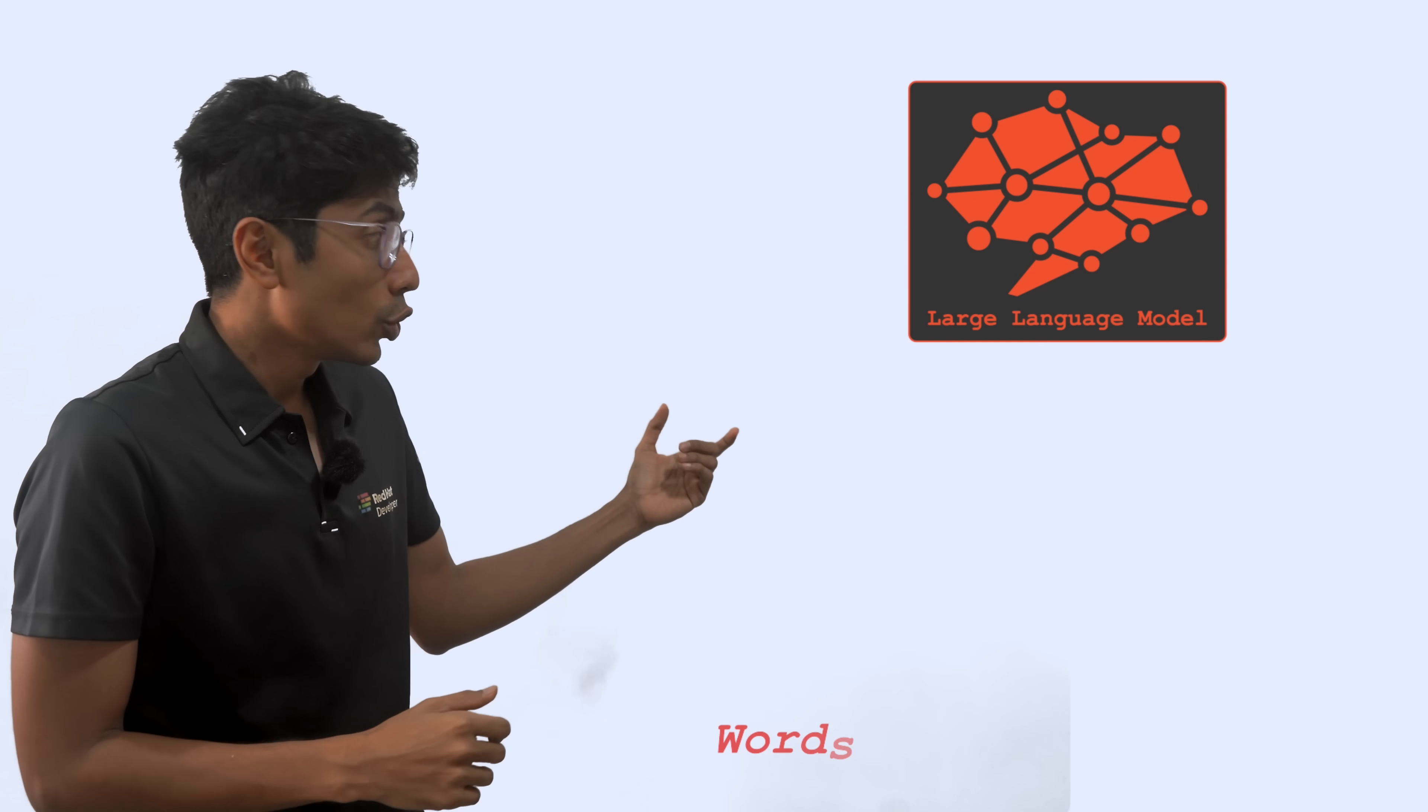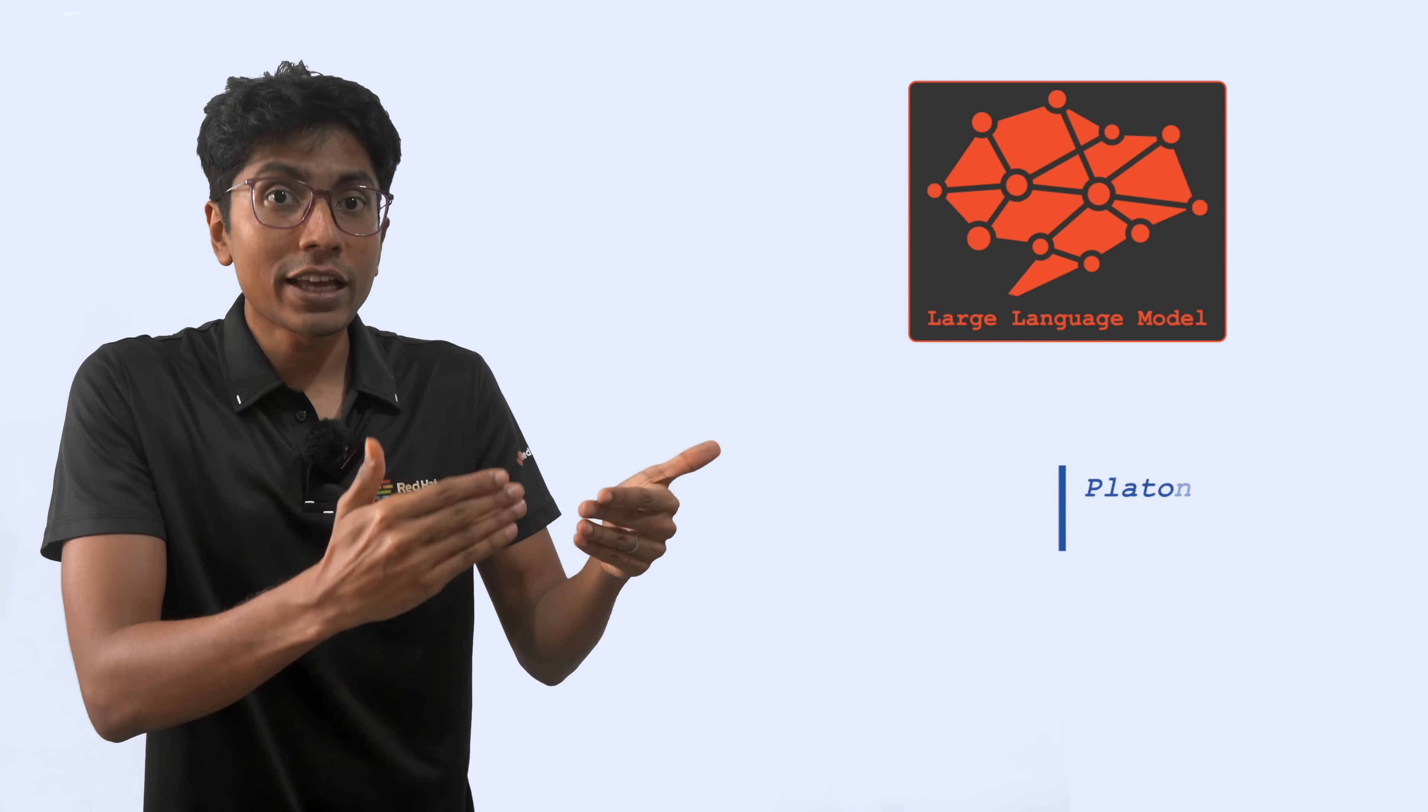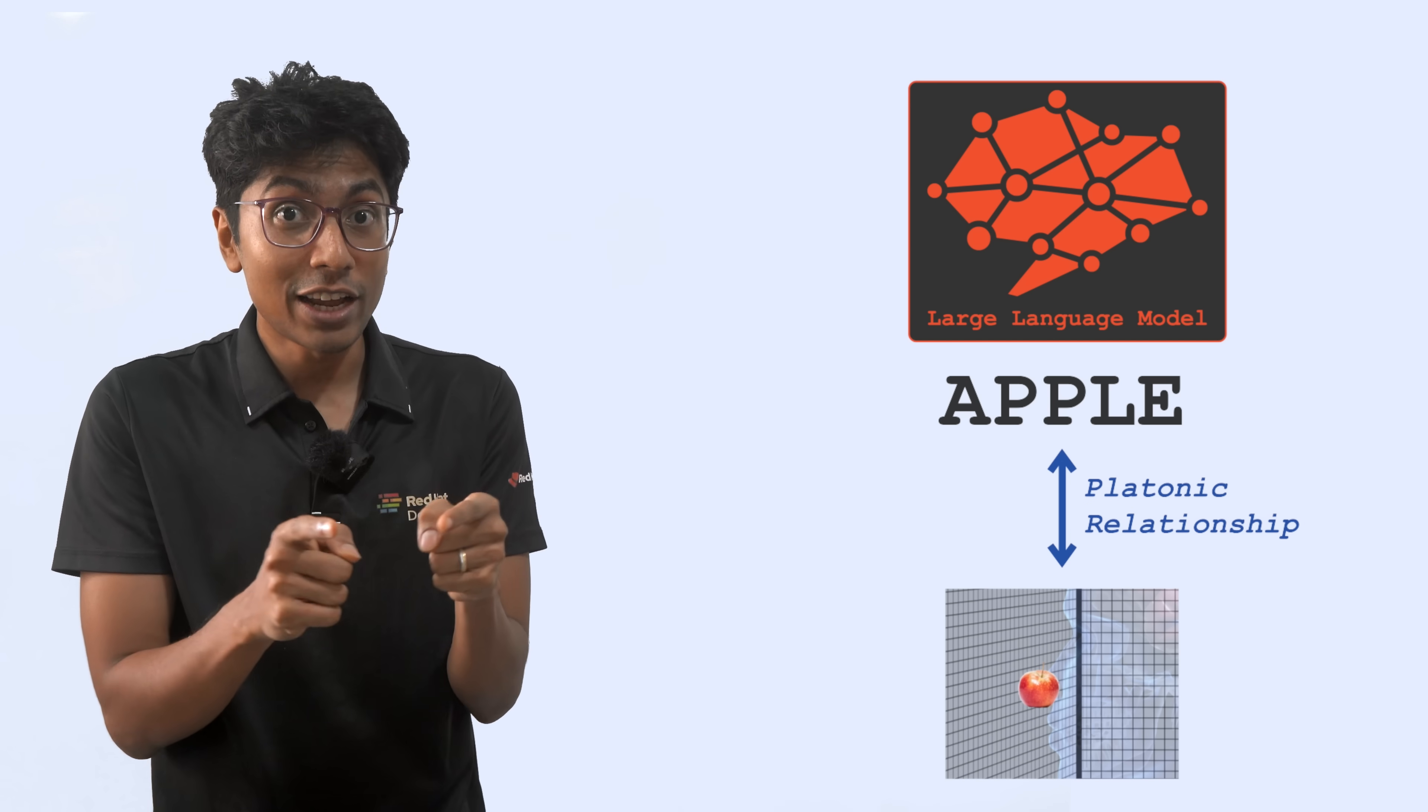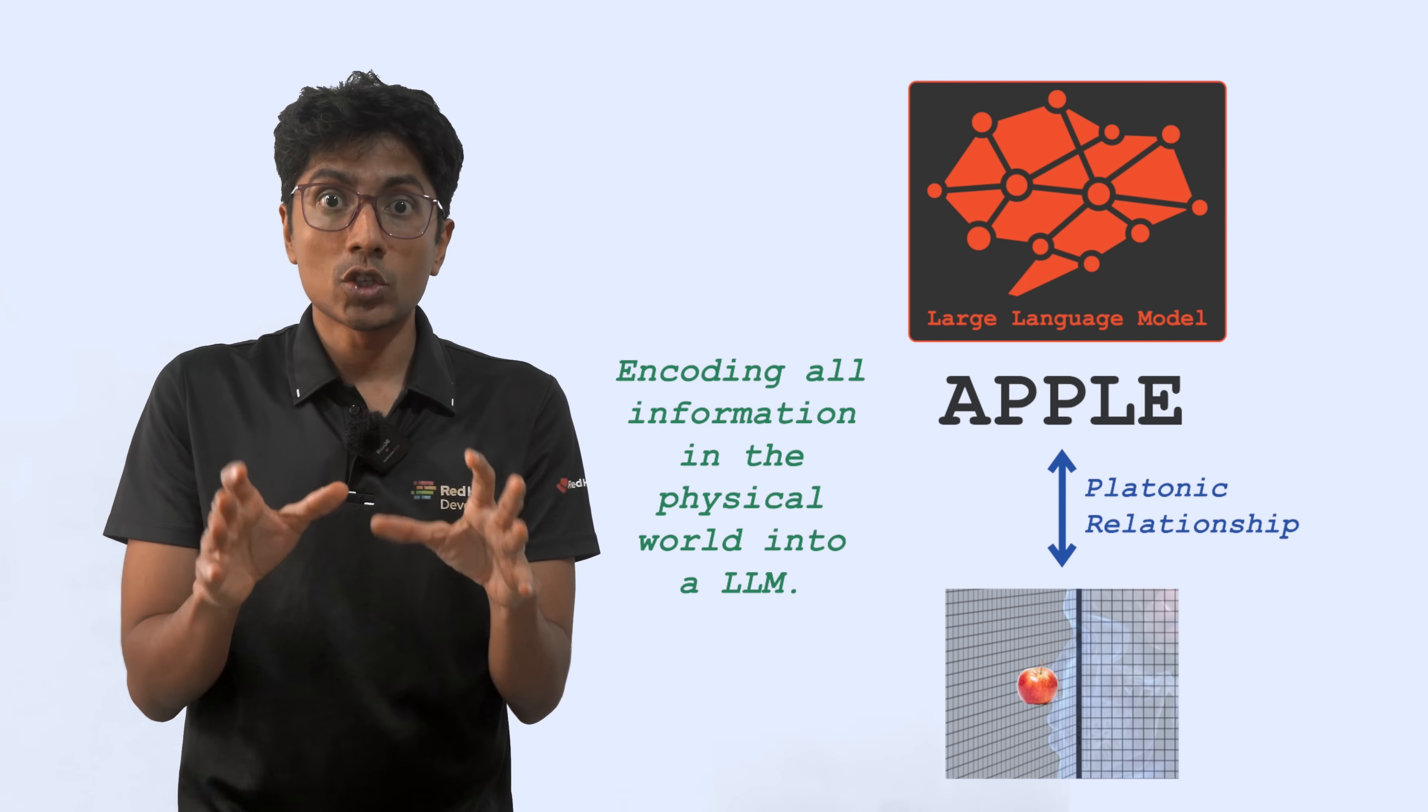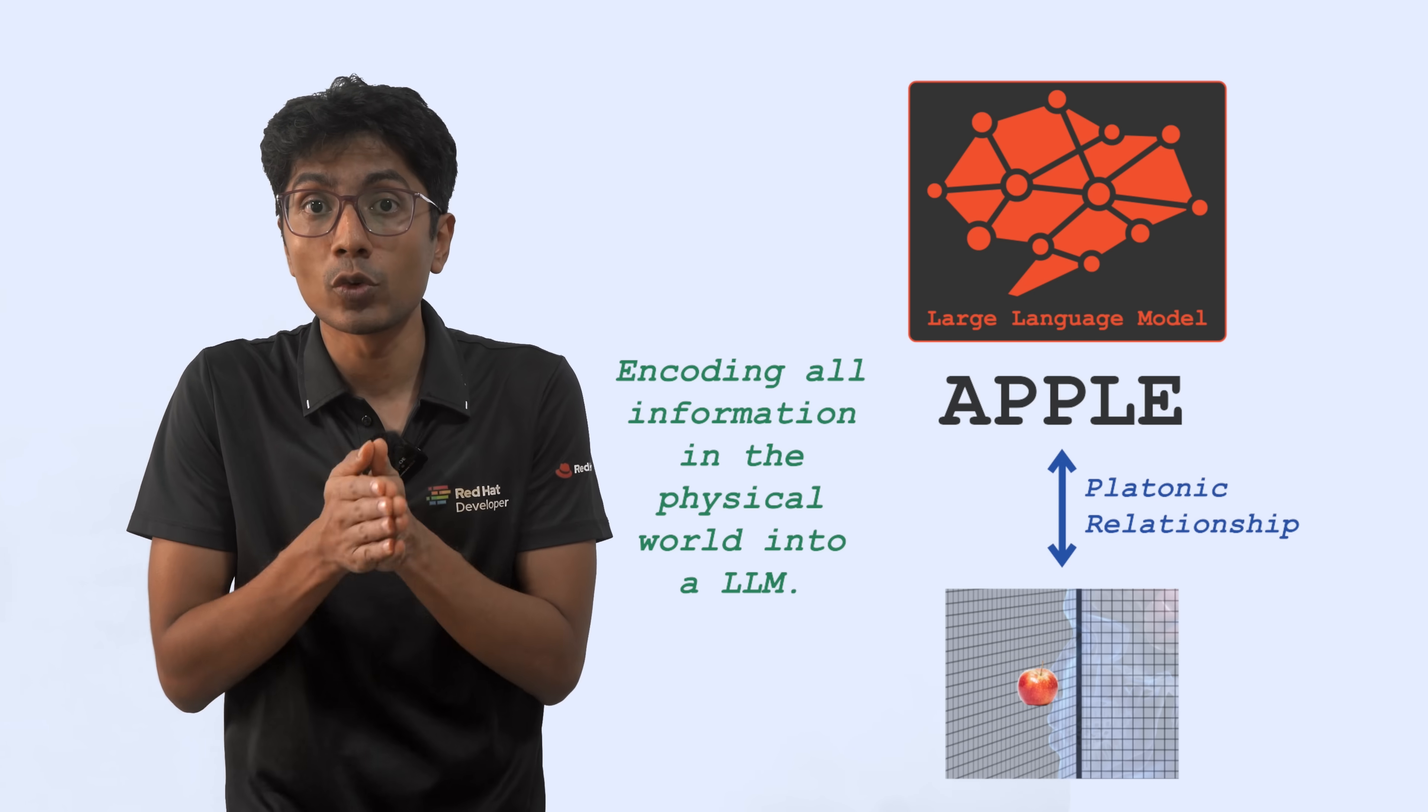Now you have large language models which look at words and try to find the meaning or the complete information of those words. If there is some sort of platonic relationship between the physical word apple and the higher level concept of apple that a large language model can describe accurately, then you can encode all information in the physical world into a large language model. That is where we are going towards. You'll see that there are some nuances here. This is not proven theory. It's still a hypothesis. But it's very interesting because the experiments are pointing towards its correctness.